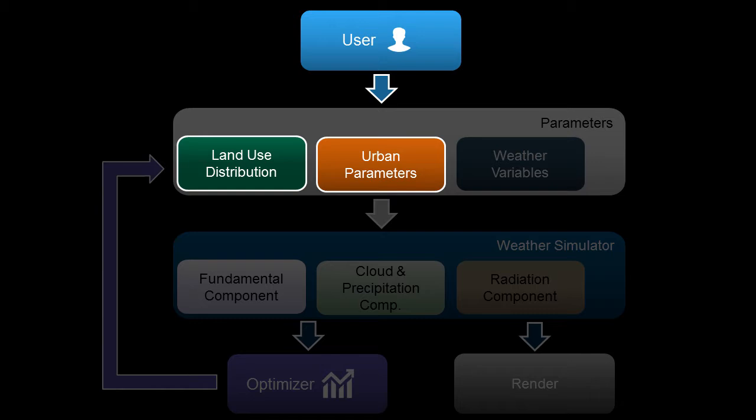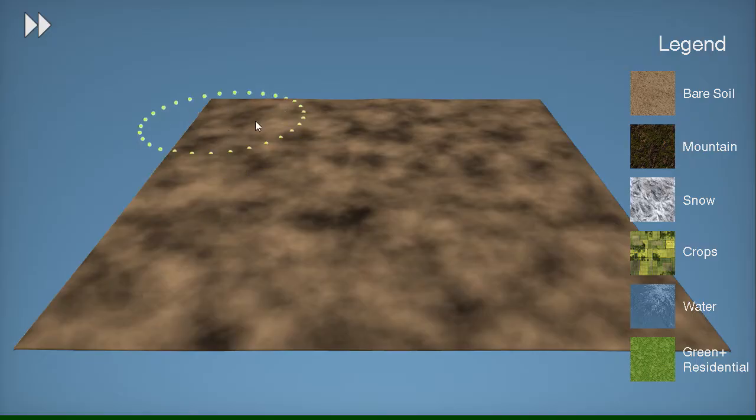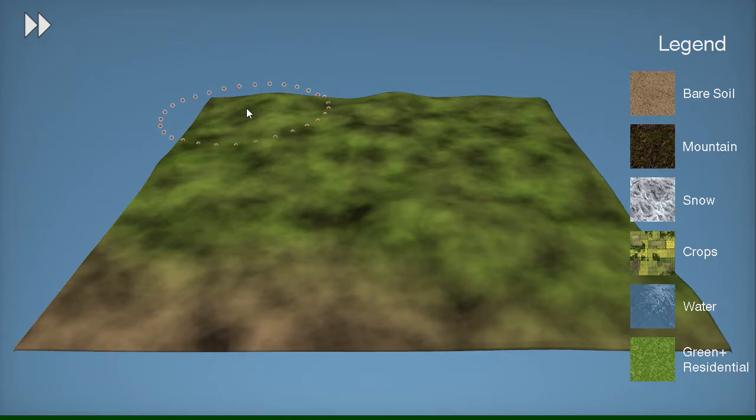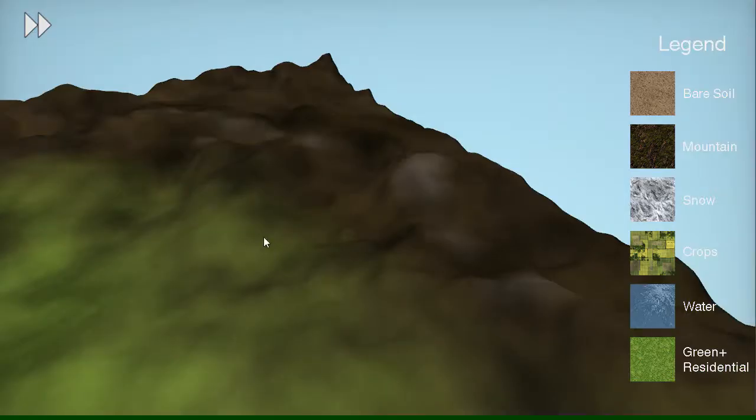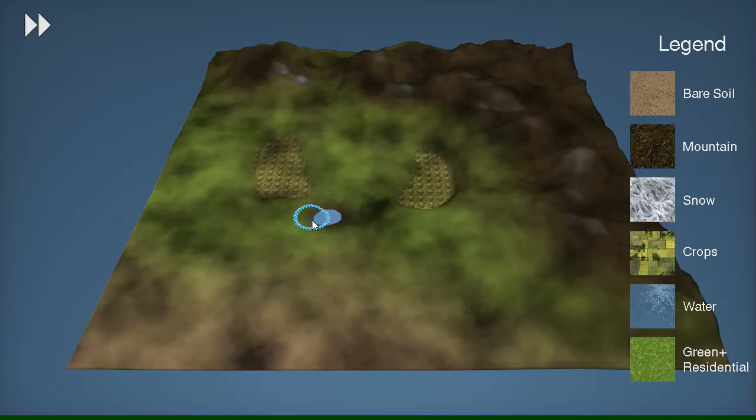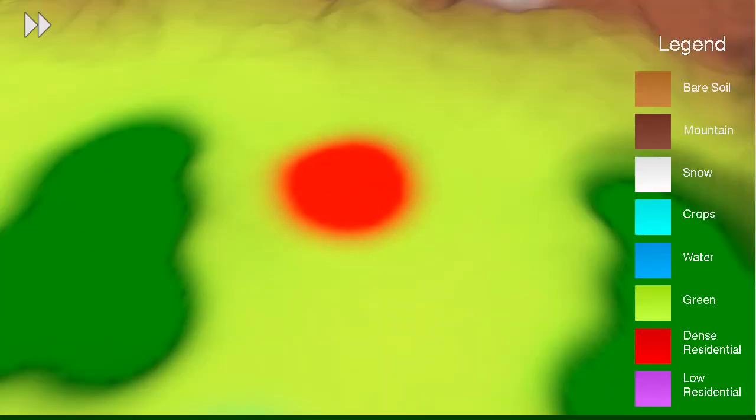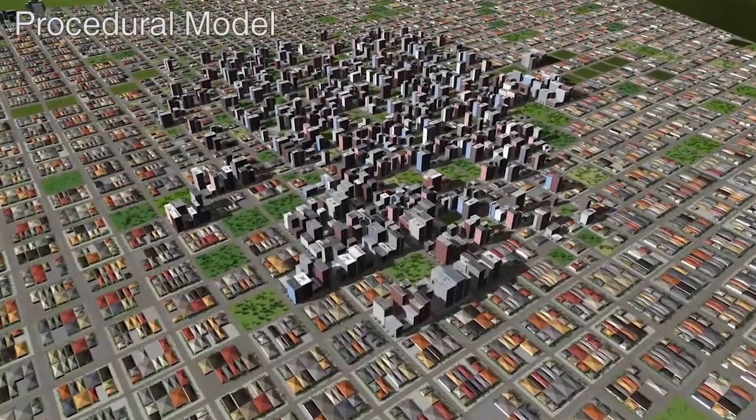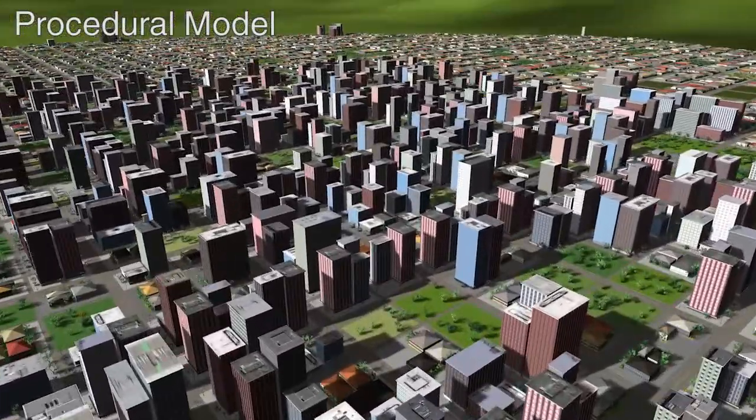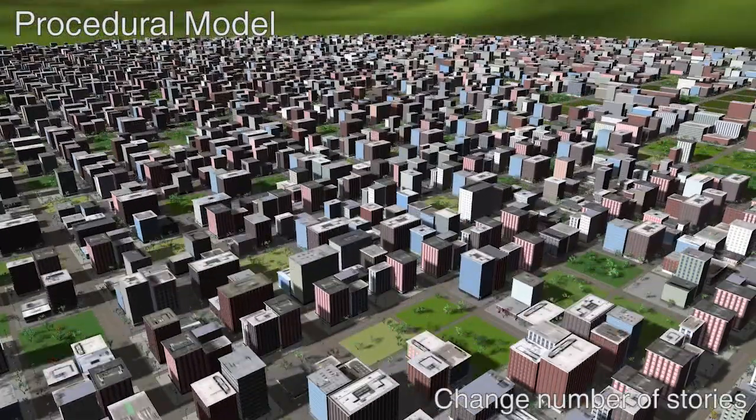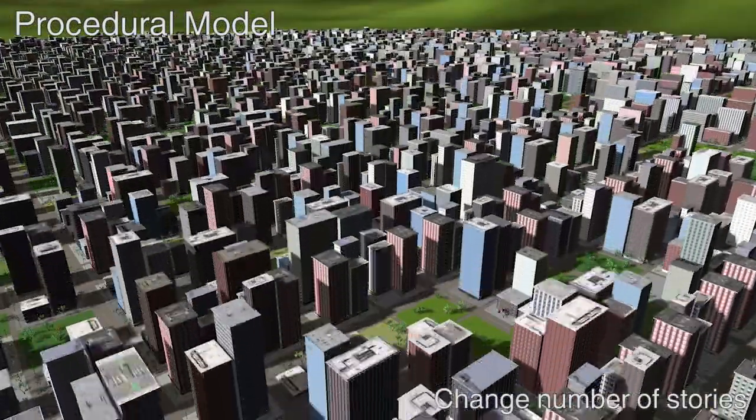The user designs the land use and the urban model. The user interactively sketches the terrain configuration and the land use distribution, including the urban area by using our brush style tool. Then a procedural model is generated. The user can later modify the city by tuning the urban parameter values.